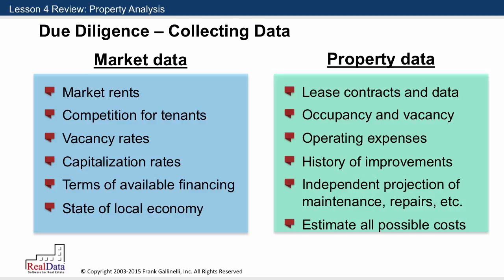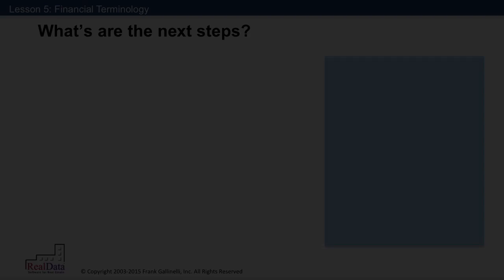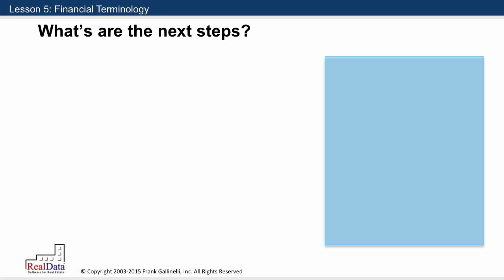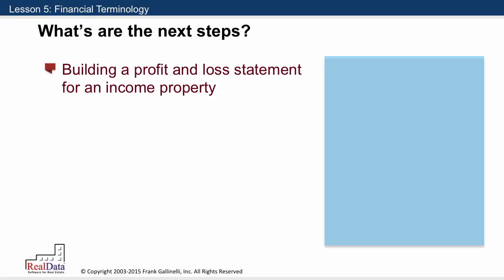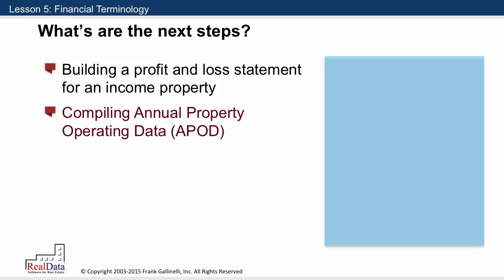The property data should include the actual lease contracts, the history of occupancy, operating expenses and improvements, as well as your own estimates of items such as maintenance and repairs and perhaps costs that have been left unmentioned. Once we have that, we want to go on to the next step in our analysis process, which is building what is effectively a profit and loss statement for an income property — something that in the industry is called an APOD: annual property operating data.